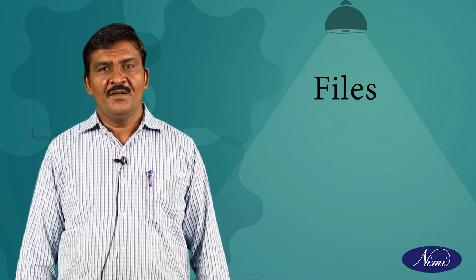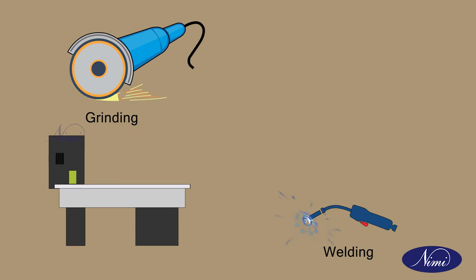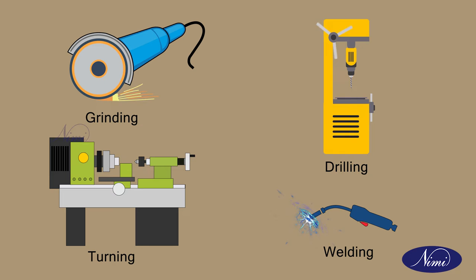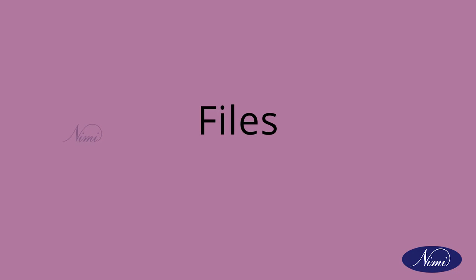Good morning everybody, I am Sivarasu from NSTHNA. Today we are going to discuss about files. In modern industry there are different methods of material removing process or metal cutting process, for example grinding, welding, turning, and other different methods of material processing available.